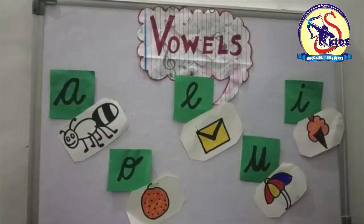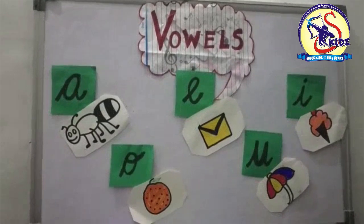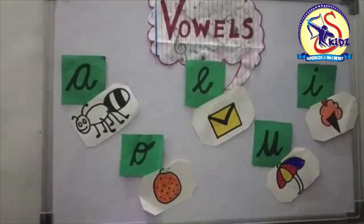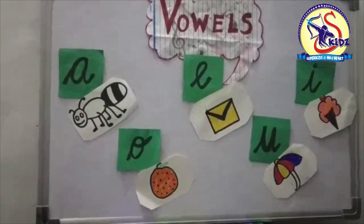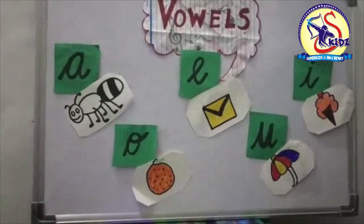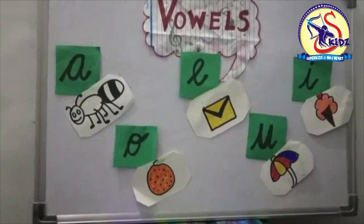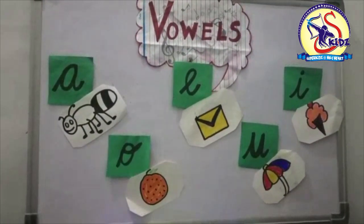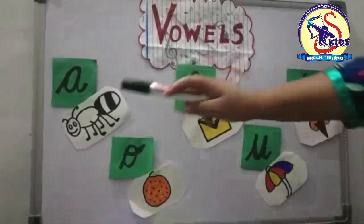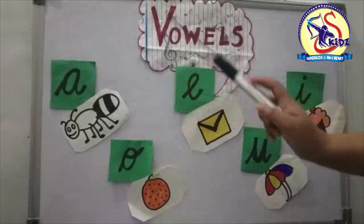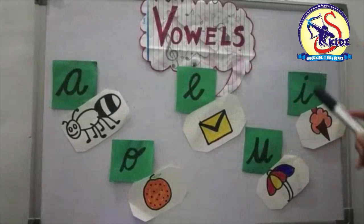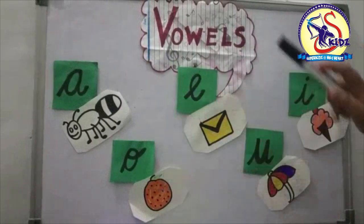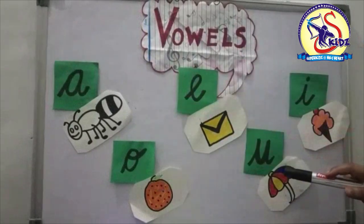Hello kids, how are you all? I hope you are super fine. You know kids, we have five vowels. We have five vowels: A, E, I, O and U.